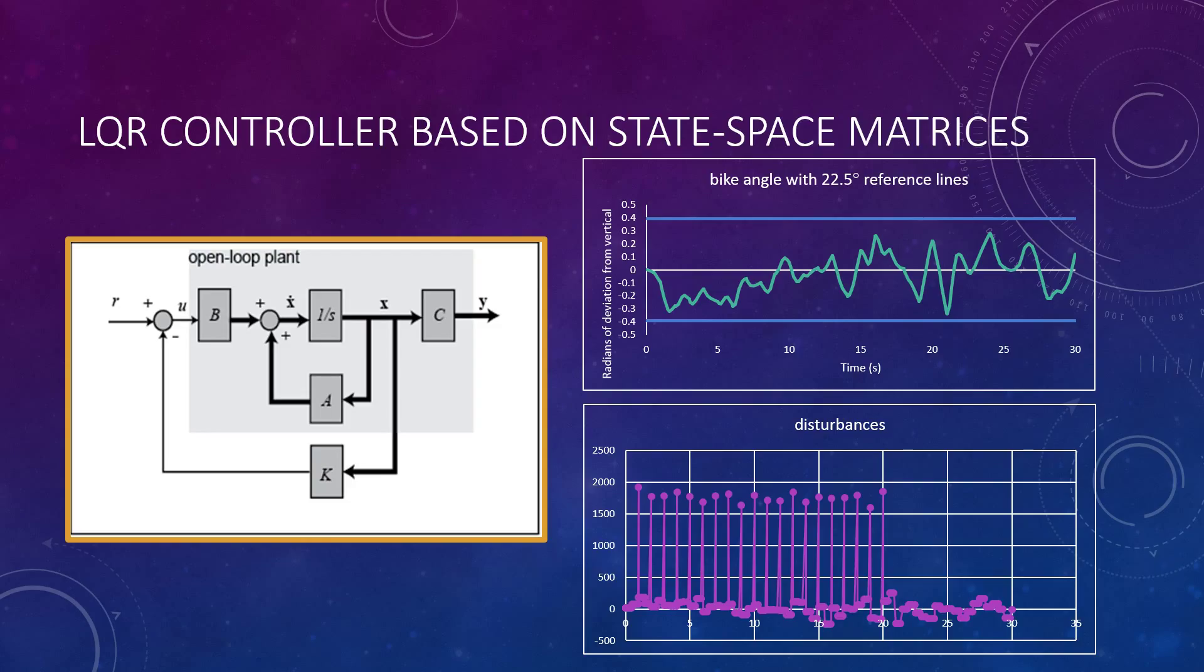And then the top graph shows the result, the angle of the bike through all of this. And it's much more stable, hangs out much closer to zero degrees. But we also included some reference lines of 22.5 degrees where we didn't want the bike to tip beyond those points. Not only just for comfort and safety riding, but also because that's where our linearization of our model is still accurate.